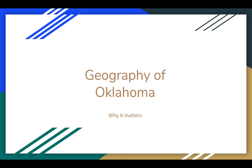The geography of Oklahoma is really interesting and important to understanding the history of our state, because a lot of what we do in our state has to do with our geography. Where we are located impacts not only the physical land that we have, but also temperature, climate, wind, rain, and tornadoes. All of those things impact the history of the state of Oklahoma, so geography is a really good place to start.